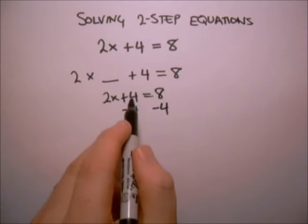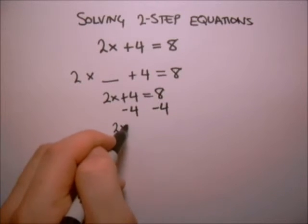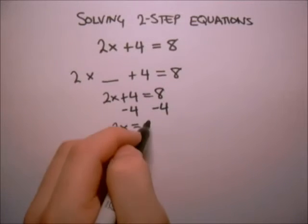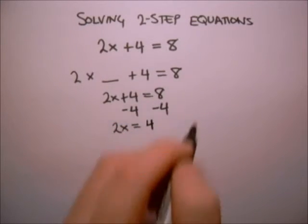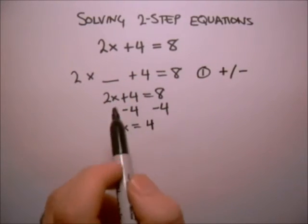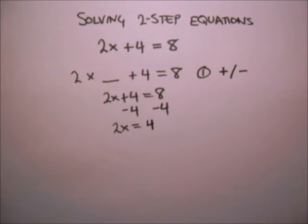On the left hand side, the 4's cancel and that leaves us with 2x. On the right hand side, that leaves us with 8 minus 4, which is 4. So our first step was to add or subtract the part that doesn't have an x in it, in order to get the x part by itself.